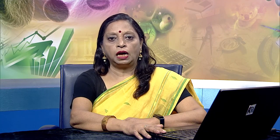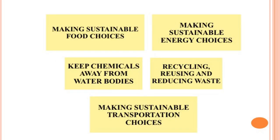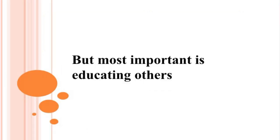We now know the various sources of air pollution and its ill effects. Air pollution cannot be fully prevented, but it can be controlled. We can reduce it by making sustainable food choices, making sustainable energy choices, making sustainable transportation choices, keeping chemicals away from water bodies, and recycling, reusing and reducing waste. Most important of all is educating others.